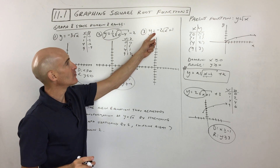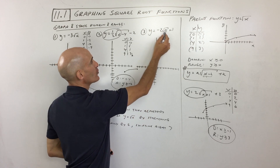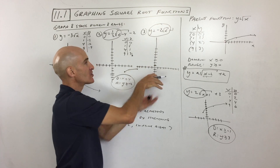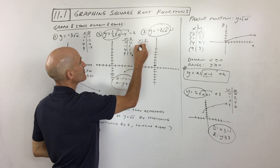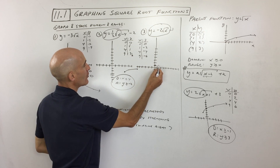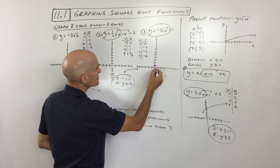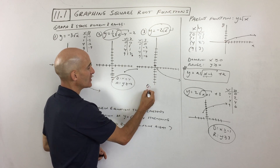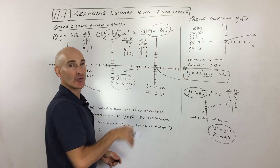One more example: y equals negative two times the square root of x, plus one. The plus one shifts it up one — it's not grouped with the x, so it's a vertical shift. If it were underneath the square root, it would shift left. The two stretches it — it goes up faster. The negative reflects it, so it goes down. Picking easy values zero, one, four, nine gives us zero, negative two, negative four, negative six. Plotting from the new starting point up one: right one down two, right four down four, right nine down six. Domain is x is greater than or equal to zero; range is y is less than or equal to one.